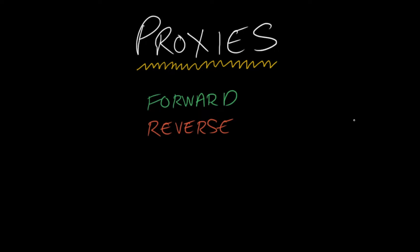In this video, I'm going to be explaining the concept of proxies in the context of system design. I'm going to be going over the two main types of proxies: the forward proxy and the reverse proxy. These two types of proxies are extremely useful in system design for things like load balancing and traffic shaping, and we're going to see a little bit more of that in a few moments.